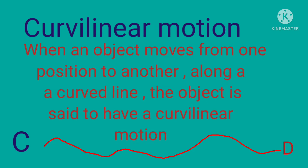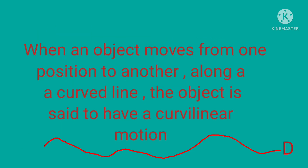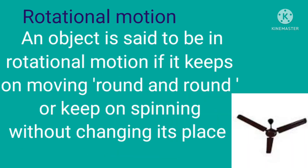Next is curvilinear motion. When an object moves from one position to another along a curved line, the object is said to have curvilinear motion. In the picture we can see the motion from C to D is curvilinear.